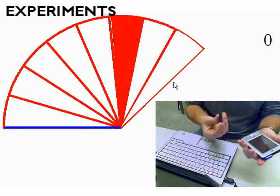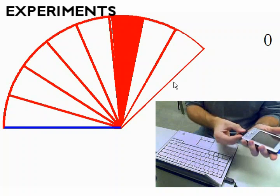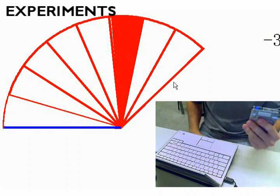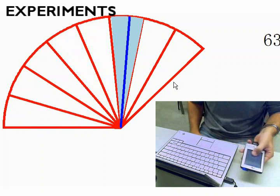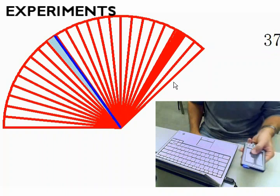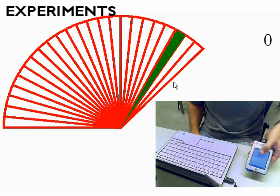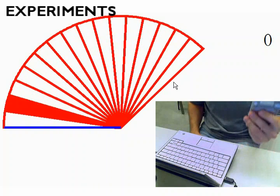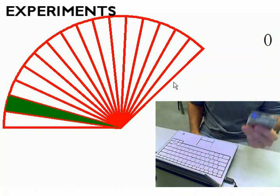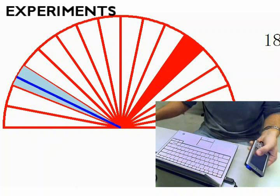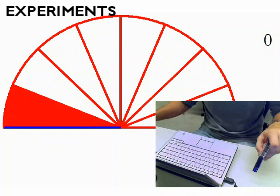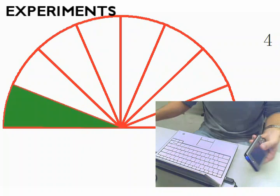In our study, we asked users to select a target using the tilt sensor by placing the PDA in a specific orientation, pressing a button on the PDA screen with their thumb, tilting the PDA until it reaches the correct position, and then releasing the button. Users performed the task repeatedly for each wrist axis in both directions, with local and remote feedback, and with varying target widths and locations.